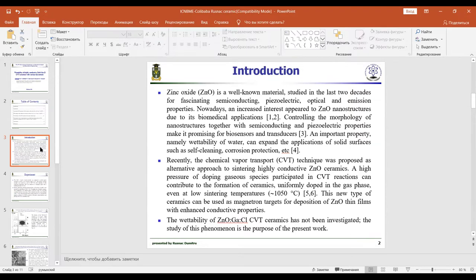This type of ceramics can be used as magnetron targets for deposition of zinc oxide films with enhanced conductive properties. The wettability of zinc oxide doped with gallium and co-doped with chlorine CVT ceramics has not been investigated. The study of this phenomenon is the purpose of the present work.